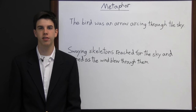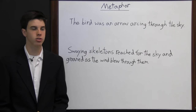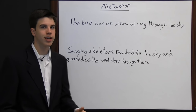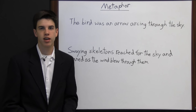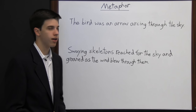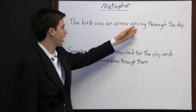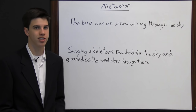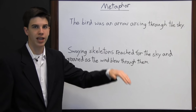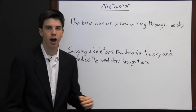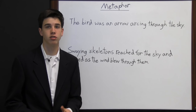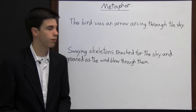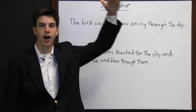A metaphor is a type of figurative language in which the author equates one thing with that of something else. "The bird was an arrow arcing through the sky" — the bird wasn't actually an arrow, but the author is equating the bird with an arrow arcing through the sky. This is a way for the author to describe the bird in more detail without being direct and obvious. Because of the metaphor, the reader can conclude that the bird must have flown swiftly and bent through the sky.